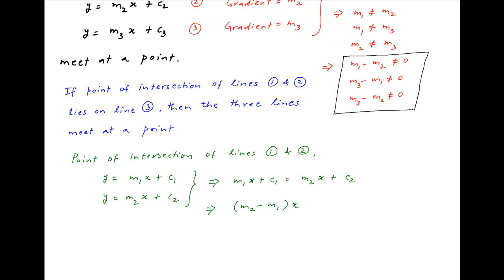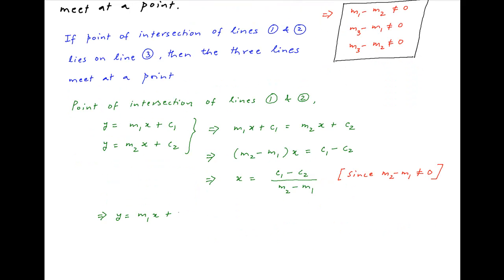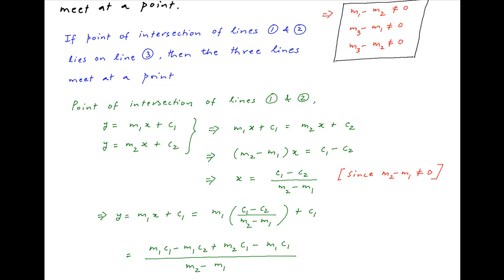Therefore, m2 minus m1 times x is equal to c1 minus c2. Dividing by m2 minus m1, which is not equal to 0 as established above, we get x equals c1 minus c2 upon m2 minus m1. Therefore, at the point of intersection, y equals m1x plus c1, which simplifies to m2c1 minus m1c2 divided by m2 minus m1.